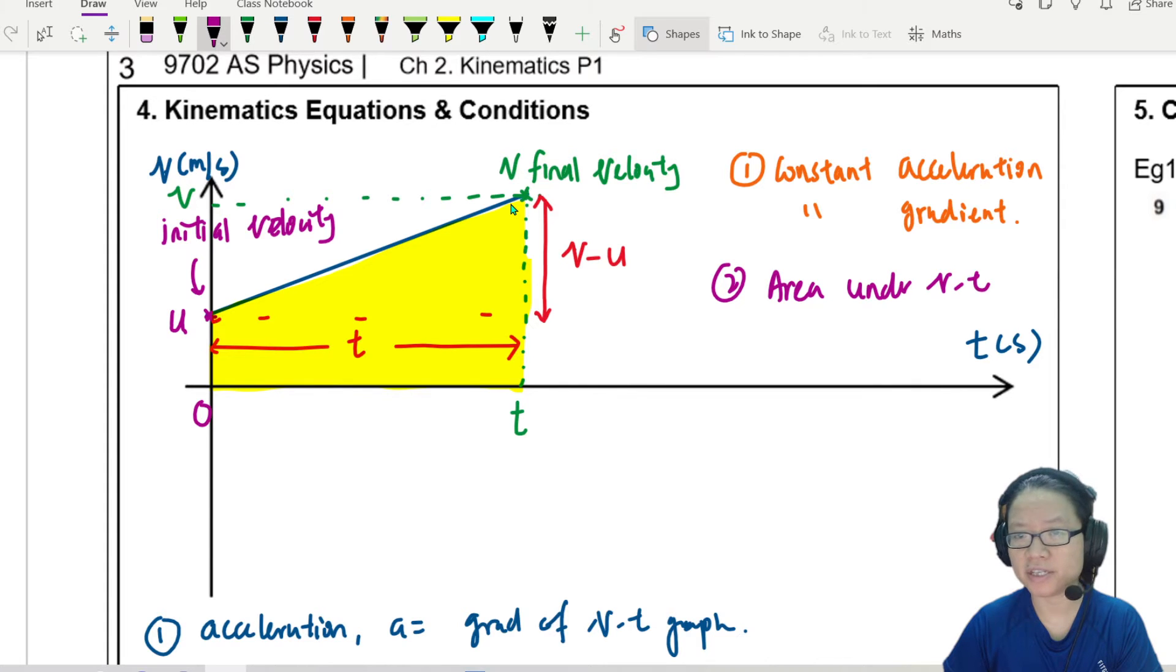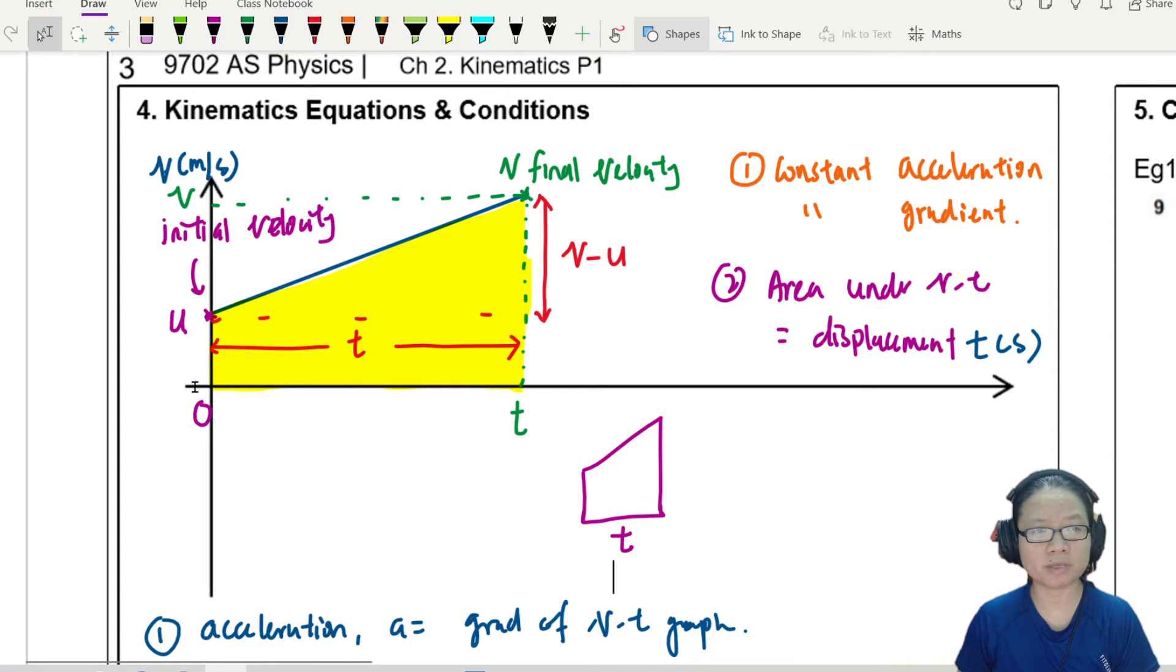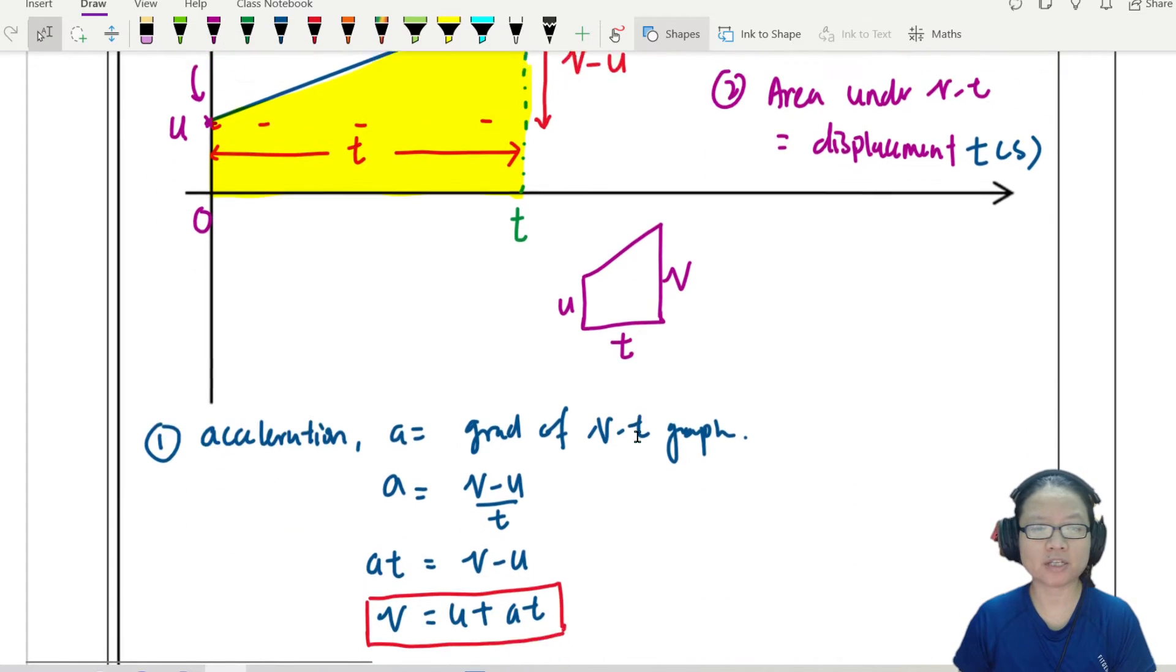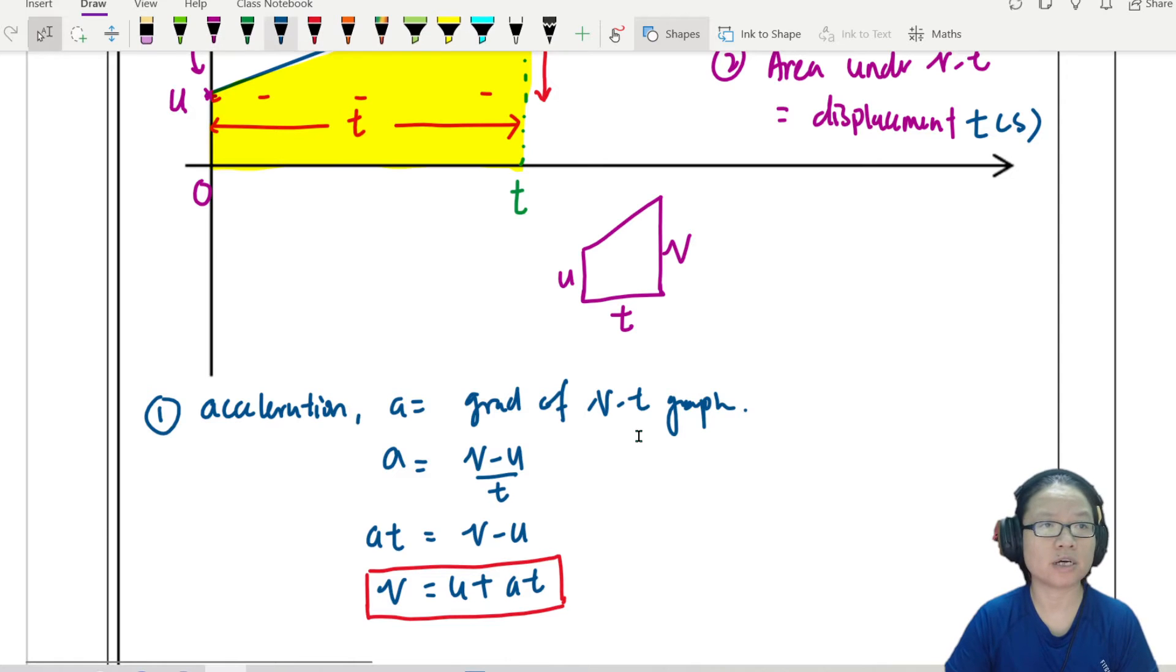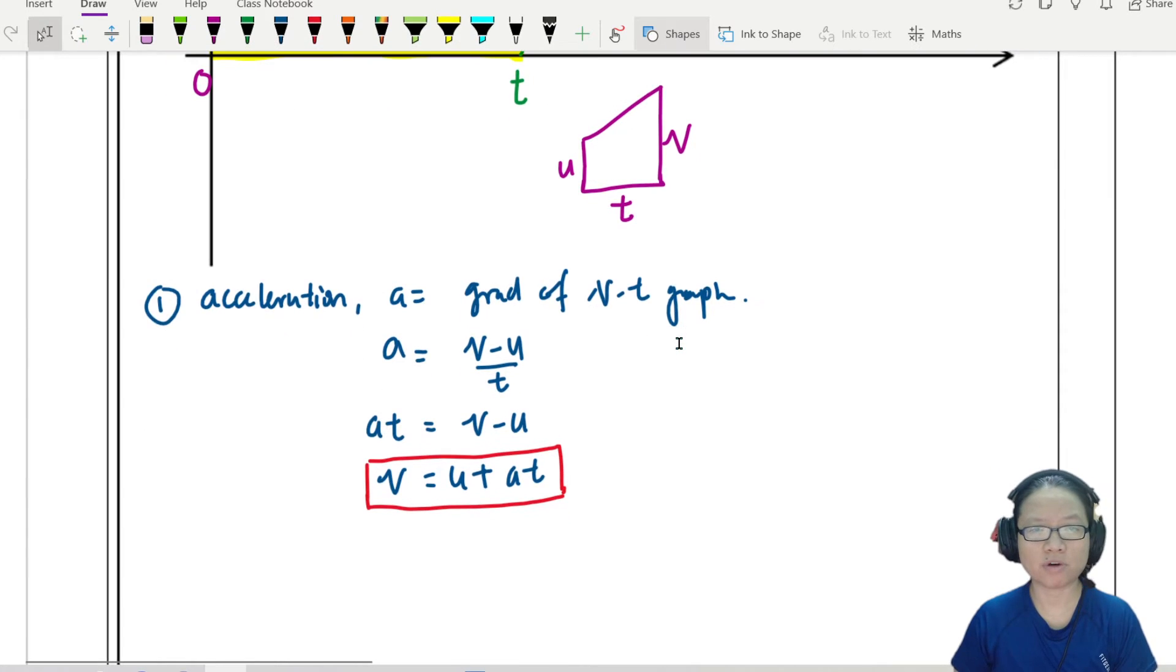So I'll write down here number two. Area under VT is equal to displacement. Let's look for area. So this is a trapezium. If you are a bit lost, I'll draw the trapezium for you. This here is t. t would be the base of the trapezium. The whole length would be v. This whole length here is u.